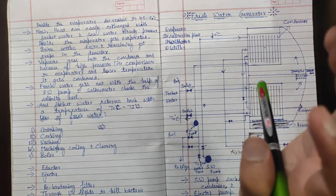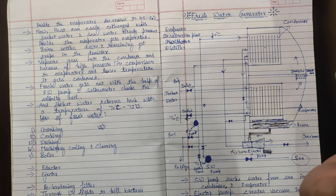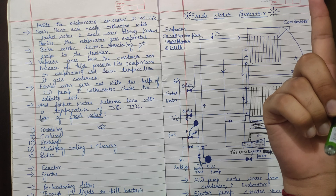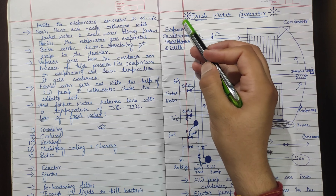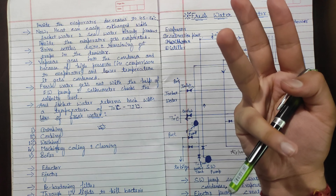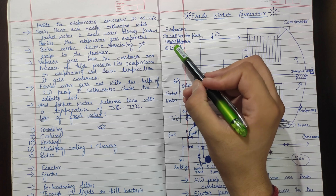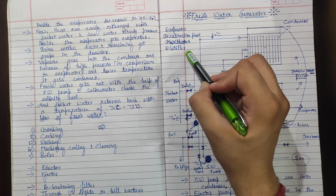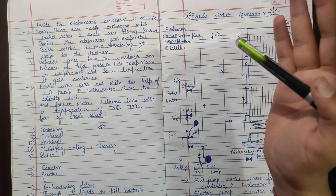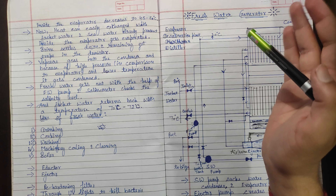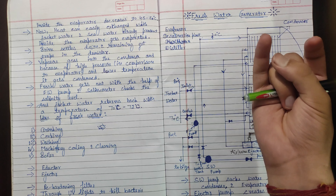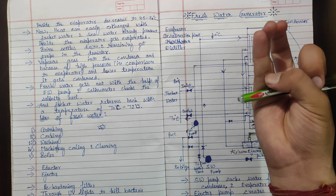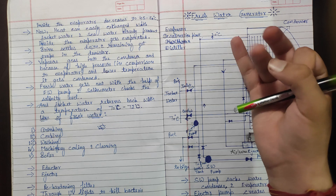What are the different names of a fresh water generator? The first name is fresh water generator, the second is evaporator, the third is desalination plant, and the fourth name is distiller. So: first, fresh water generator; second, evaporator; third, desalination plant; fourth, distiller.